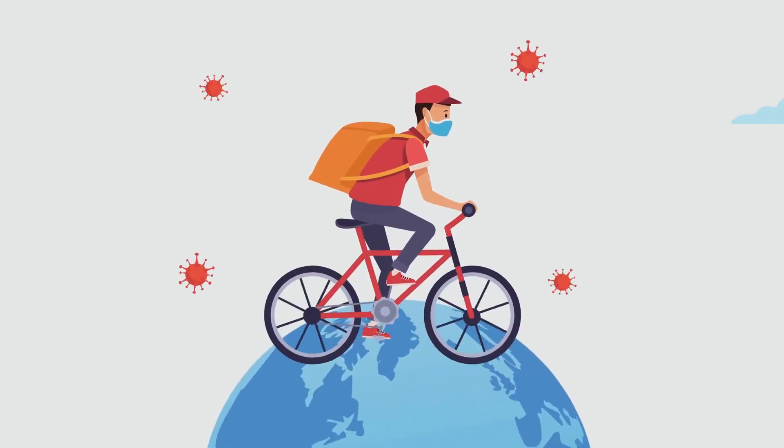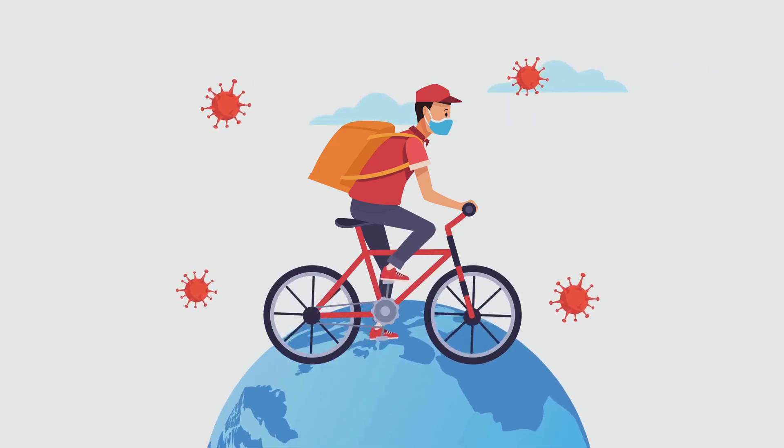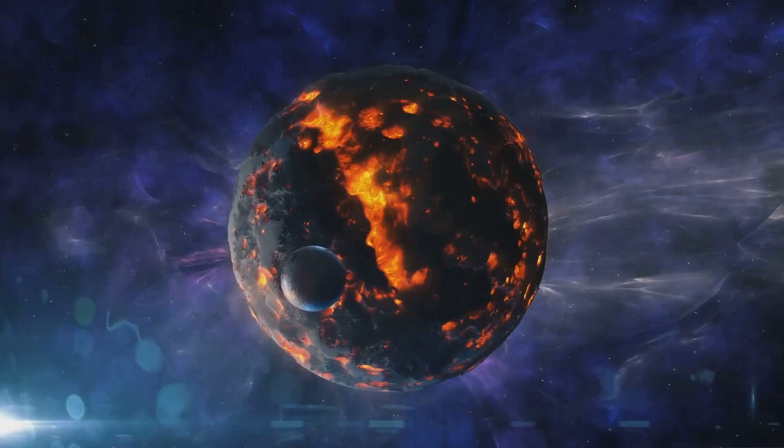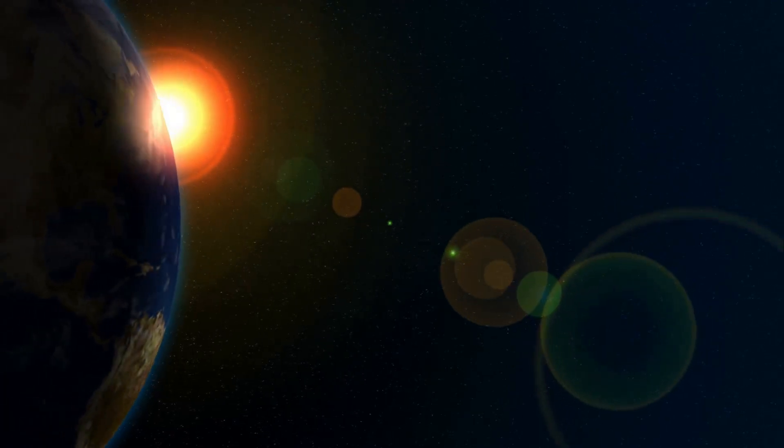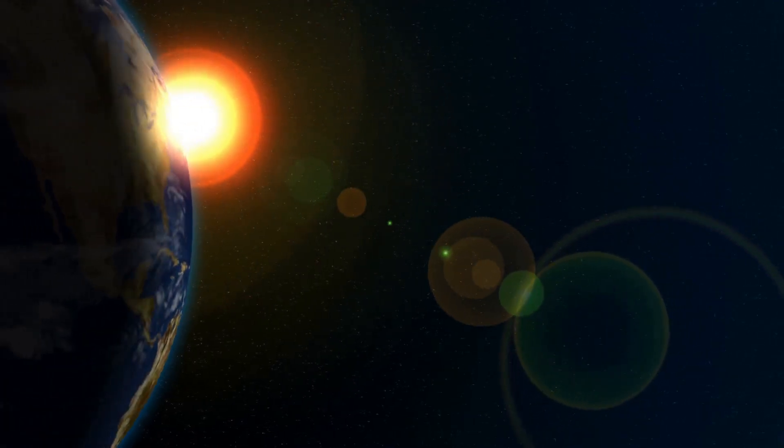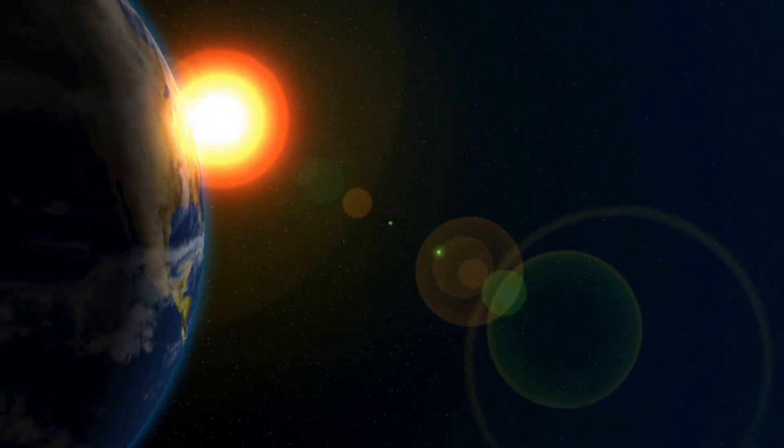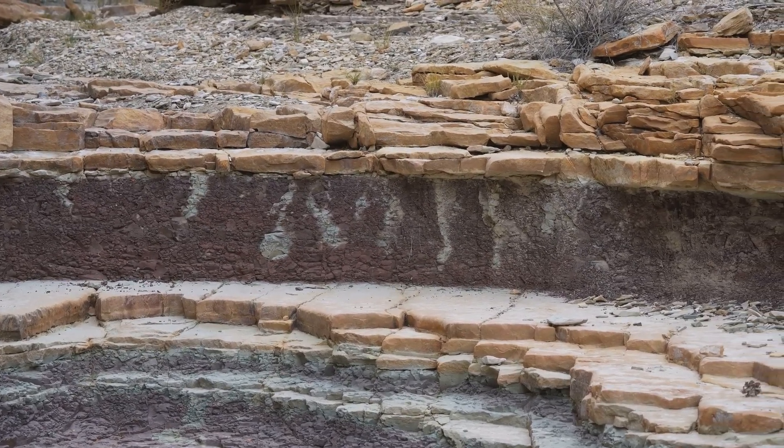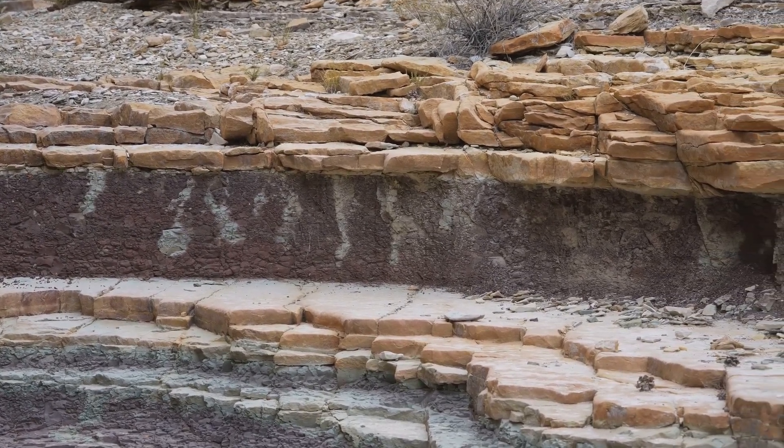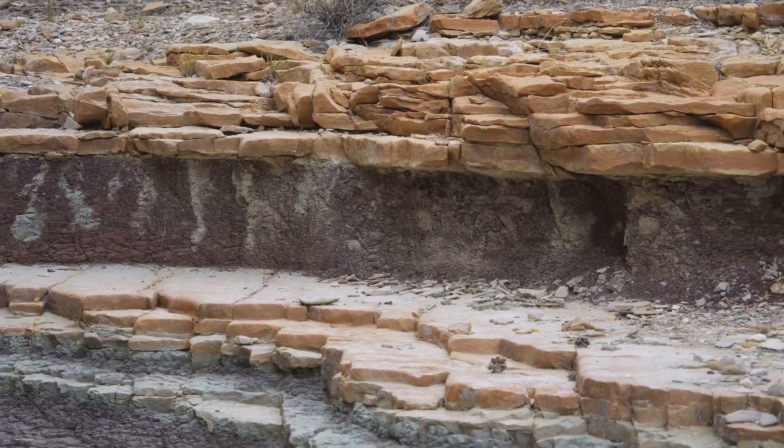Gravity pulled the denser elements, like iron and nickel, towards the center. This formed the planet's core. Lighter elements, like silicon and oxygen, rose to the surface, eventually solidifying to form the Earth's crust. This separation of materials into layers, driven by density differences, was a crucial step in Earth's evolution.